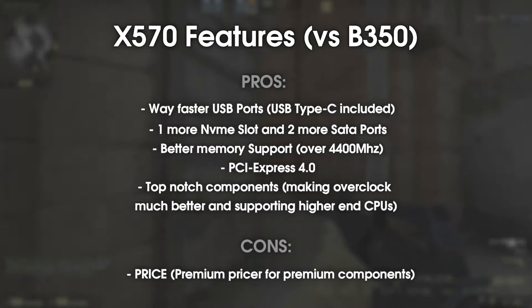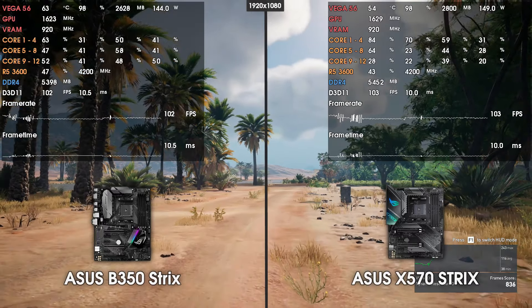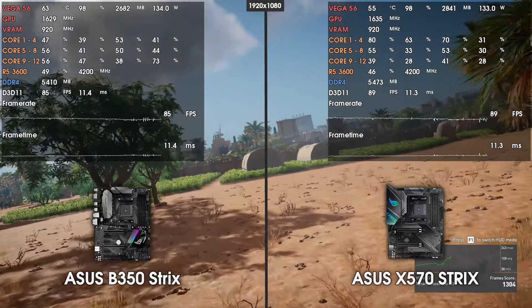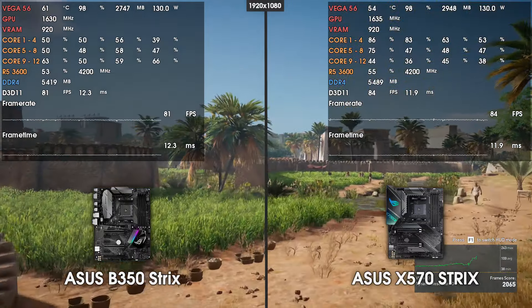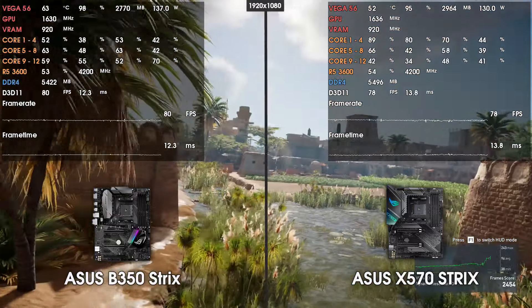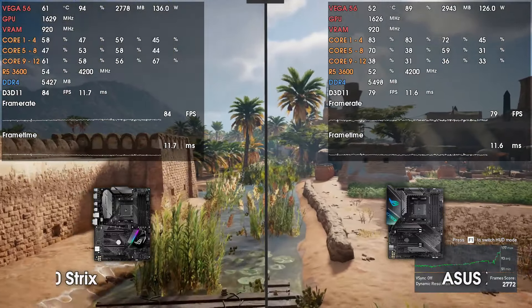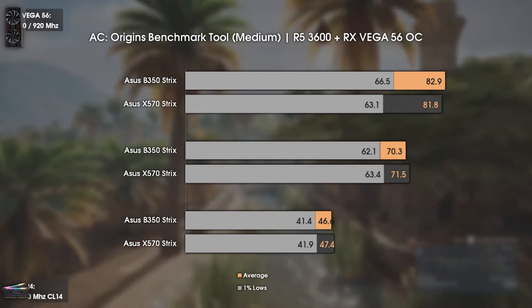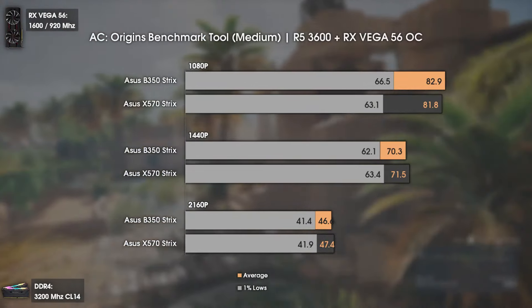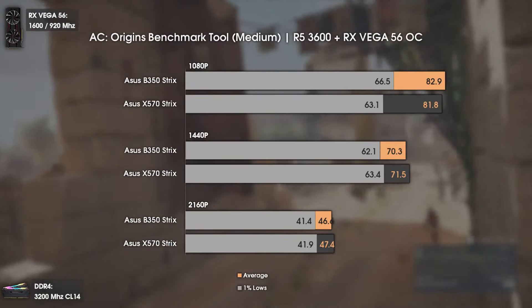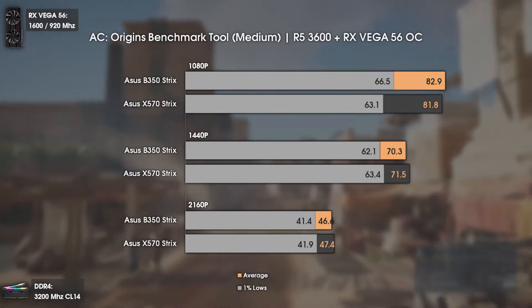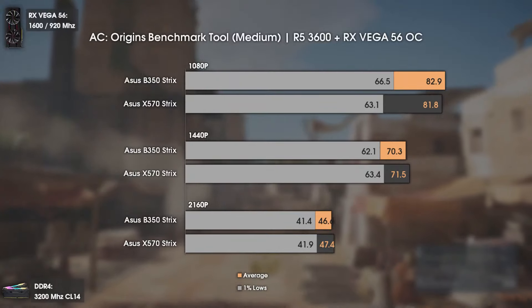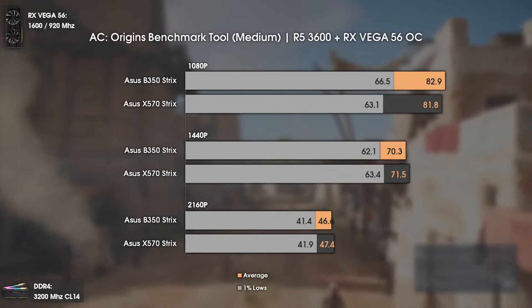Now let's see how it performs. Starting with CPU-sided tests: Assassin's Creed Origins. Almost all results are within the margin of error. At 1080p, the X570 seems slightly worse, possibly due to an early BIOS. At 1440p and 4K, there is a slight tendency for more FPS on the X570, maybe due to PCIe 4, but nothing relevant.